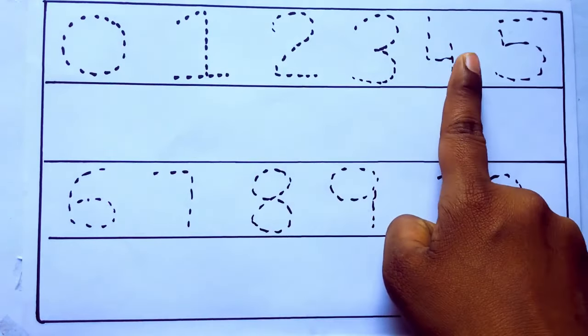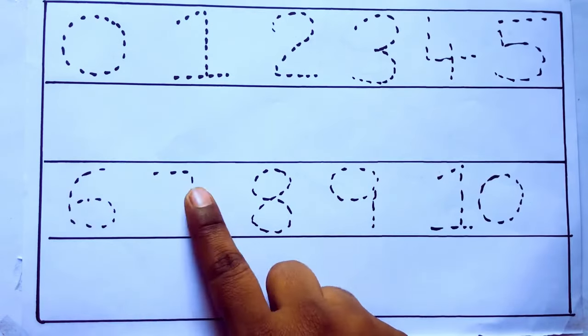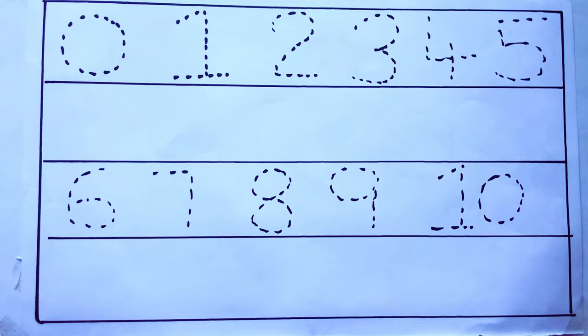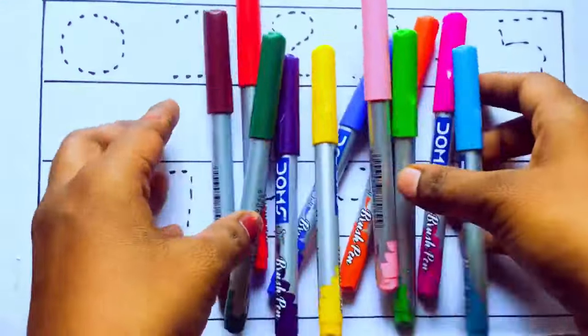0, 1, 2, 3, 4, 5, 6, 7, 8, 9, 10 and rewriting the numbers. Let's learn some colors. These are all the color pencils. Let's learn the names.